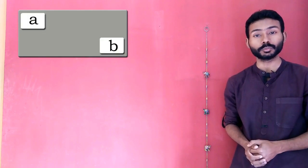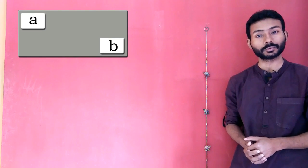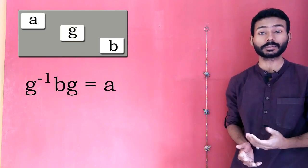Two elements A and B of a group are said to be conjugate if there exists a third element in that group, say G, such that G inverse times BG is equal to A.